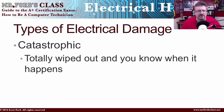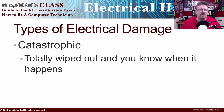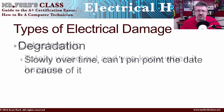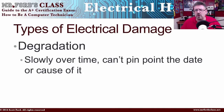Next, we have types of electrical damage. You can have catastrophic damage or degradation. Catastrophic is a total wipeout — completely and totally destroyed and fried, everything is dead. Degradation is slowly over time; you can't pinpoint the date or cause of it. It's just stuff going bad over a period of time.